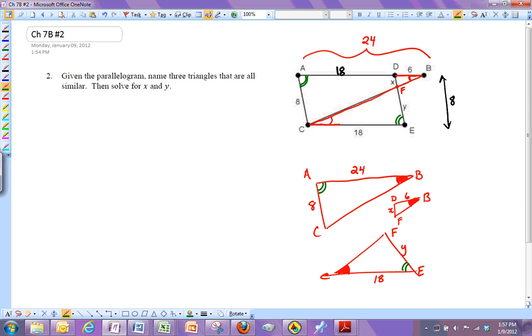And if you use the alternate interiors again, that's the same as angle D in my little triangle. So that's this angle right here. So now I've matched up two angles in all three pairs, or in all three triangles. So I've got AA similarity for all three triangles.